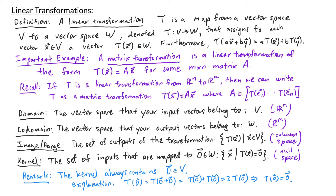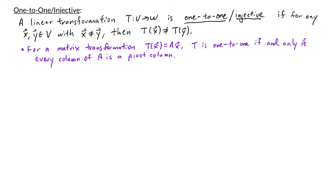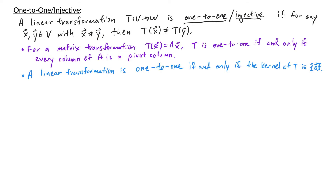Next we'll revisit what it means for a linear transformation to be one-to-one and onto. We say that a linear transformation T from V to W is one-to-one, or injective, if for any pair of distinct input vectors x and y, their outputs T of x and T of y are not equal to each other. Another way to think about this is that every input gets sent to a different output. A linear transformation is one-to-one if and only if the kernel of T contains only the zero vector of V.